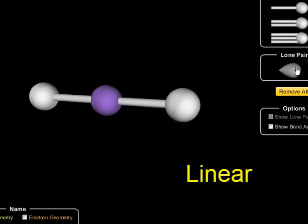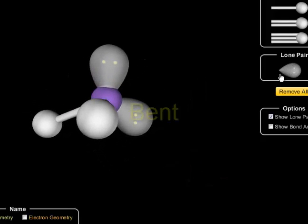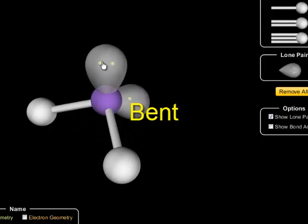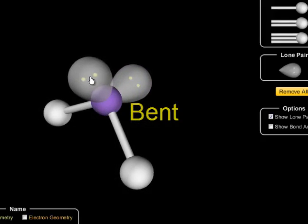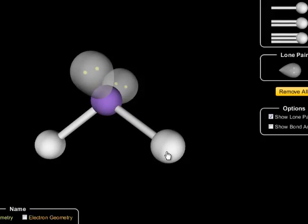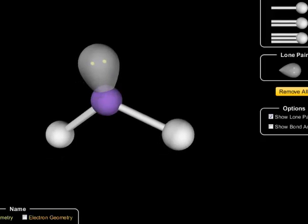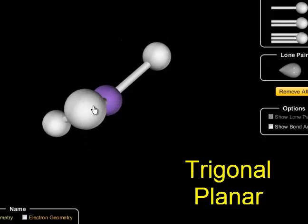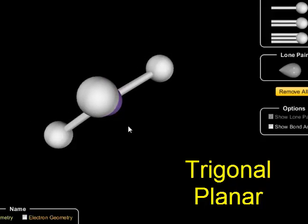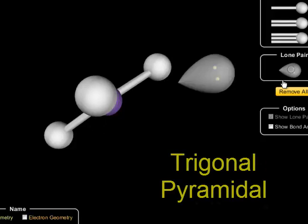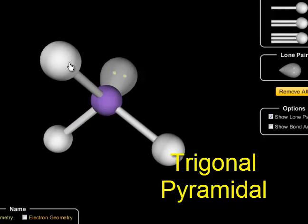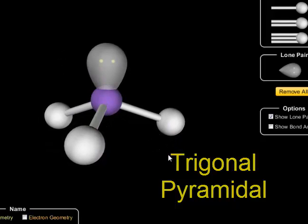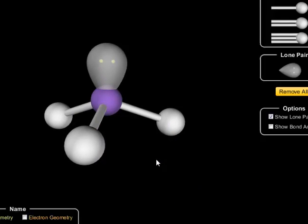Remember, if these electrons, these unshared pairs of electrons, weren't there, it would be linear. But the presence of them changes the shape. So when you draw these structures, make sure that you draw them. You can't leave them out. You have to draw them and you have to notice them when you decide what kind of shape it is. Because if they're there, it's going to be bent. If they're not there, it's linear. If we have three bonded atoms and we don't have a set of unshared electrons, it's trigonal planar. If we do, then all of a sudden it sits up like a pyramid and it's trigonal pyramidal. So the unbonded electrons will make a big difference in the shape that you have.